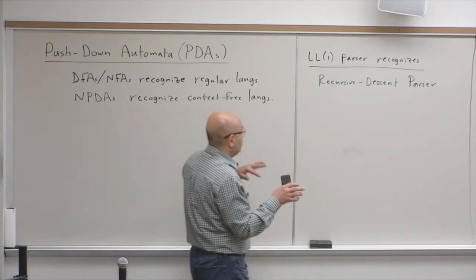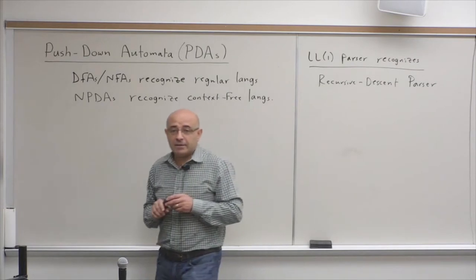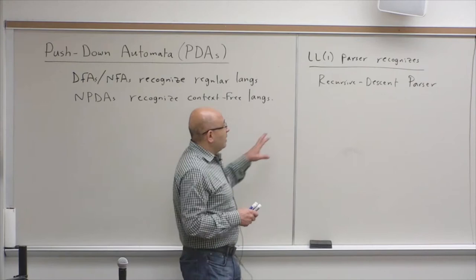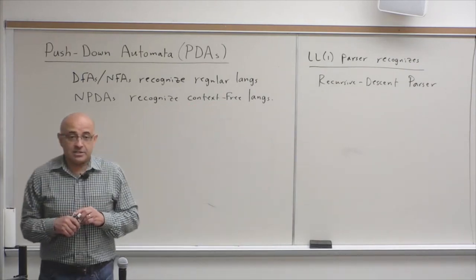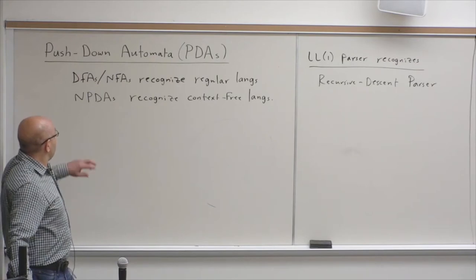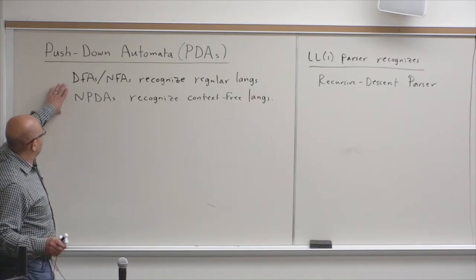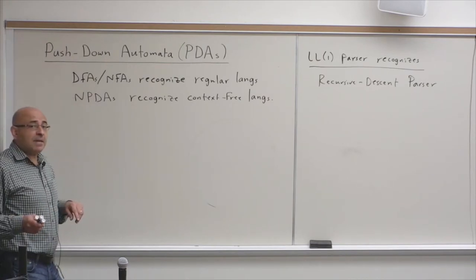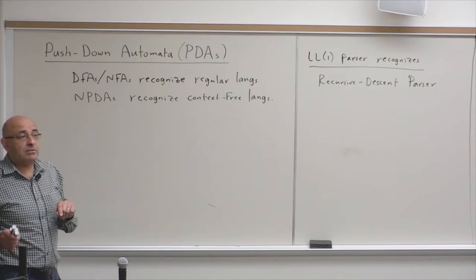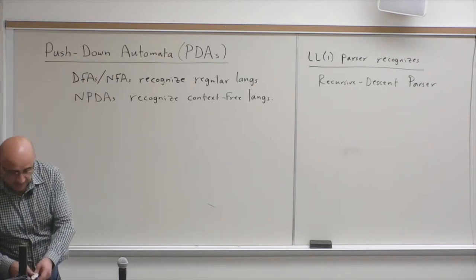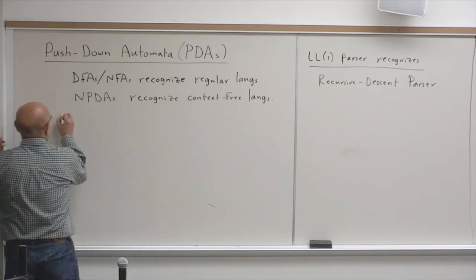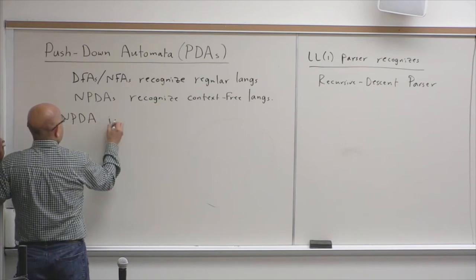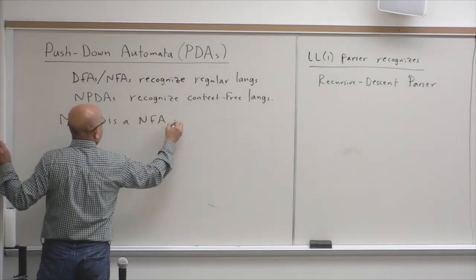The pushdown automaton is the theoretical model for recognizing a context-free language, whereas parsers are practical algorithms for recognizing certain — not all — context-free languages. There is much in common between the theoretical model and the practical parsing algorithm, one common feature being the stack. A non-deterministic pushdown automaton is basically like a non-deterministic finite automaton, but with a stack.